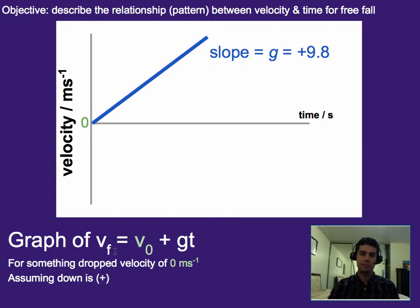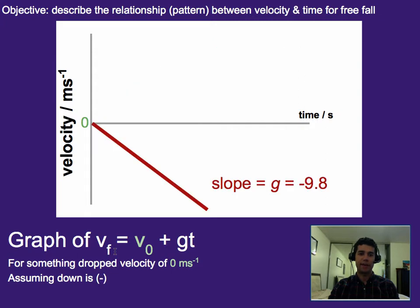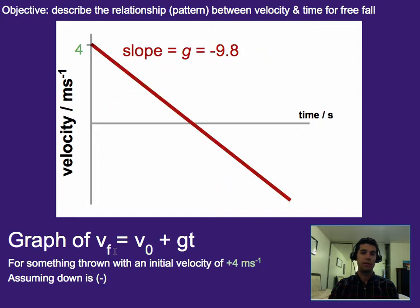Now if we went back and were imagining down as negative, but said, what happens if it starts with an upward velocity of 4? Well that just looks like this now instead. It's starting with a positive velocity of 4, where down is negative, up is positive. Then that means it starts with an upward velocity of 4.